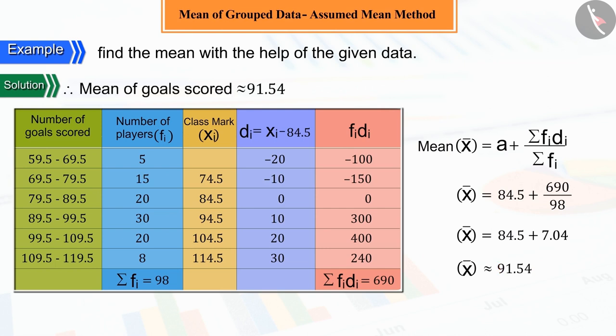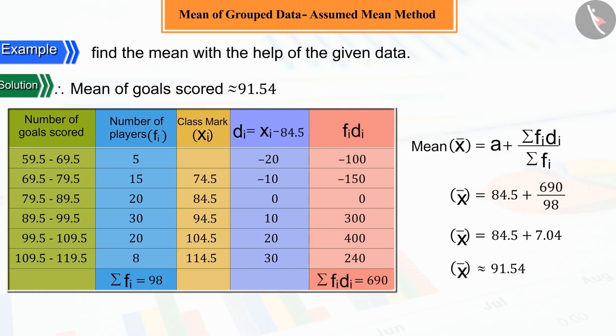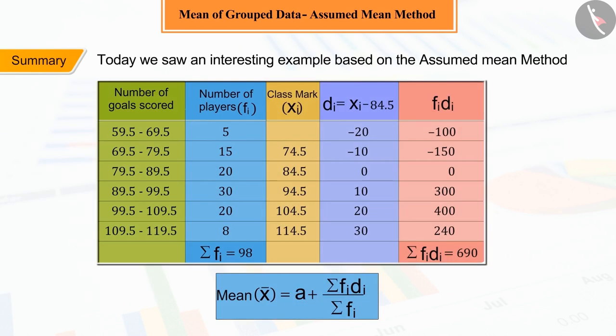Hence, we can say that the mean of the goal score is 91.54. So, hope you must have understood the assumed mean method of finding the mean.